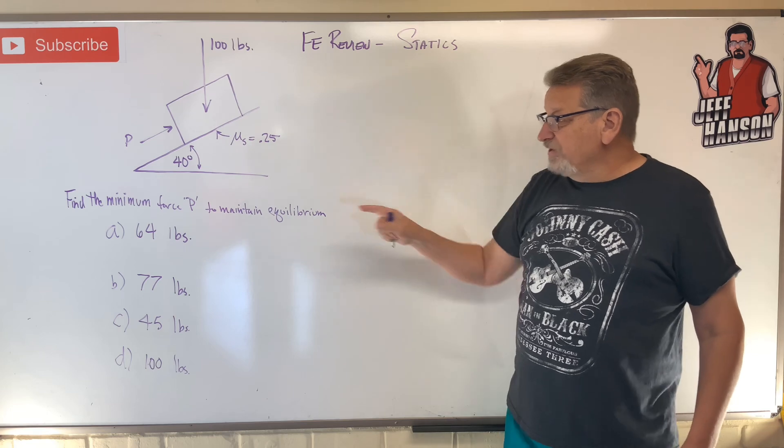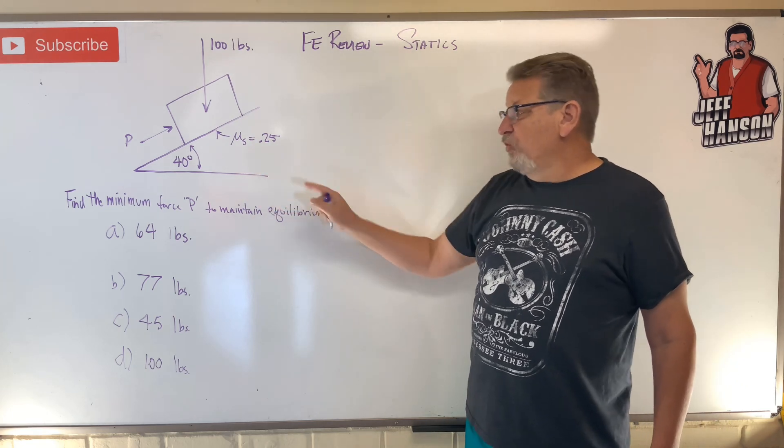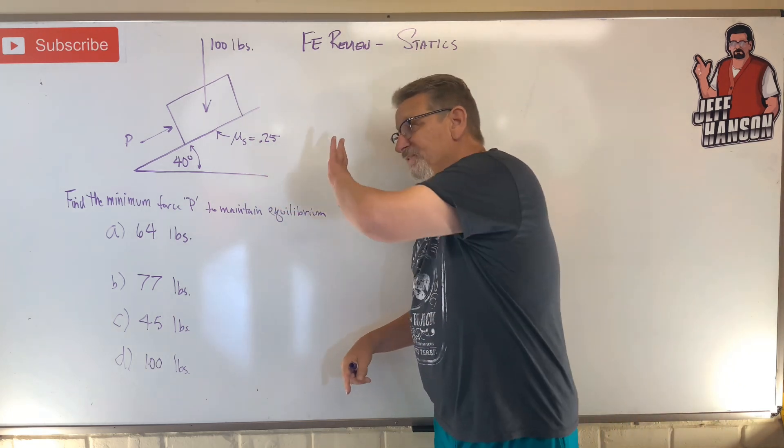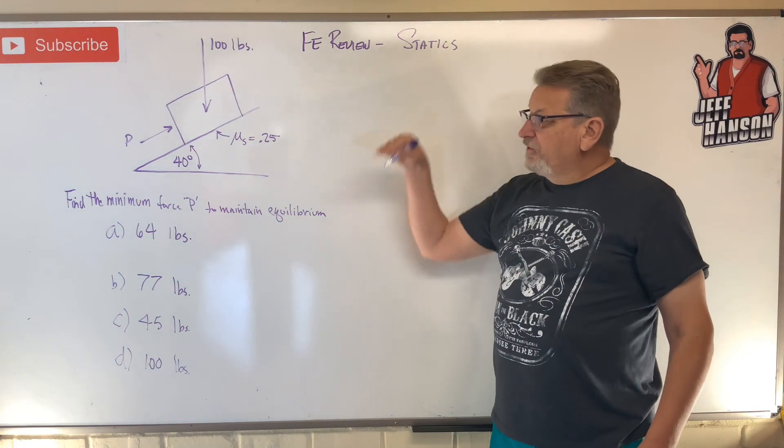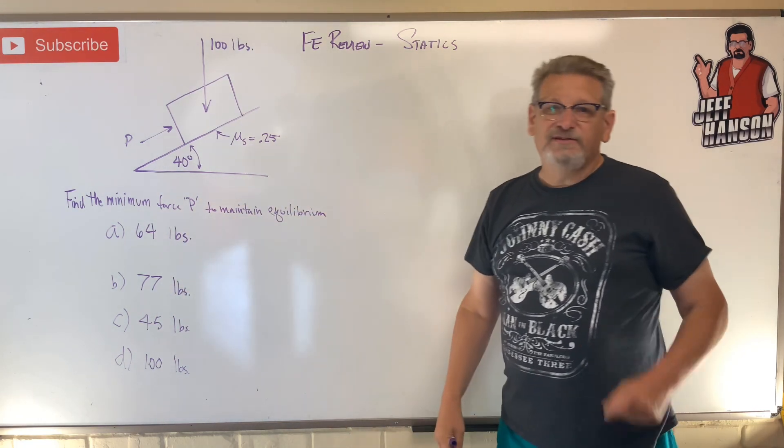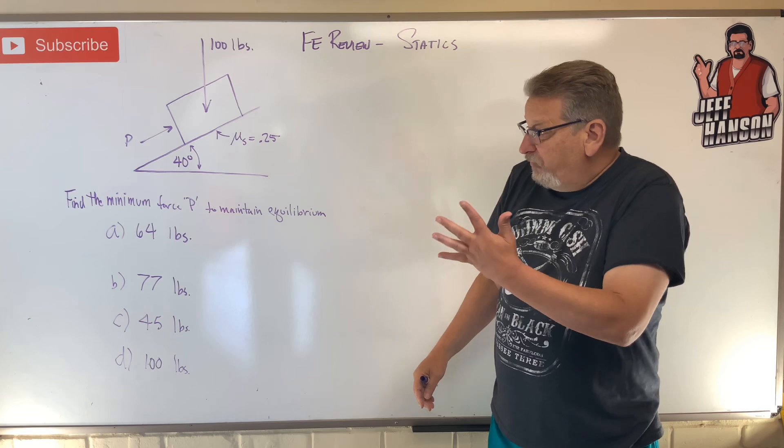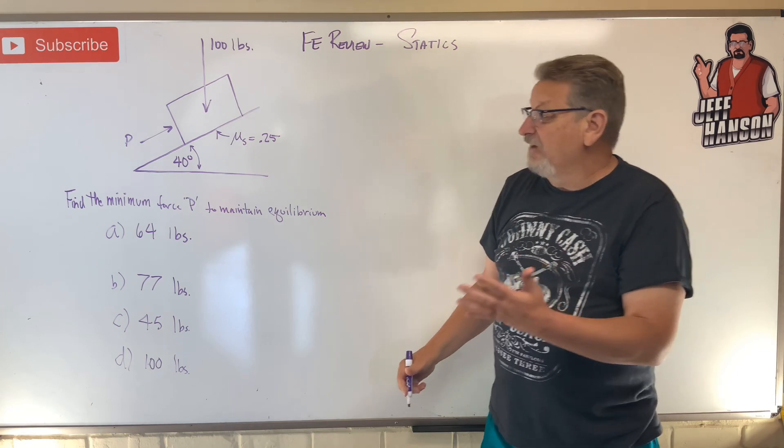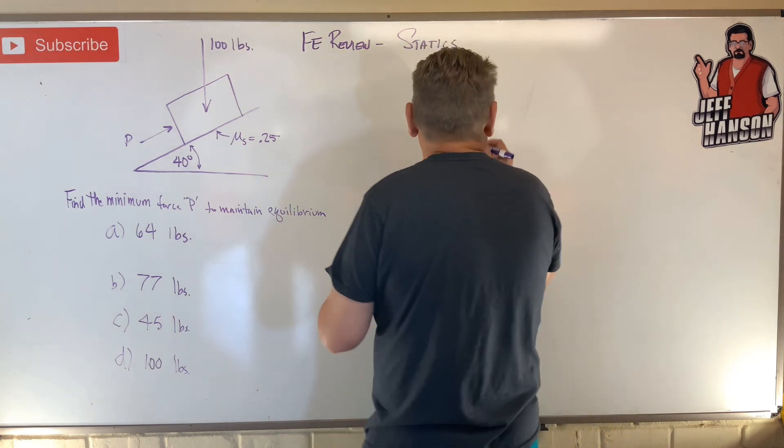All right, did you get it? Find the minimum force P. So if the force P wasn't there at all, the box would want to slide down the ramp. So we need a little bit of force to keep it from sliding down the ramp. That's the condition we're solving for.